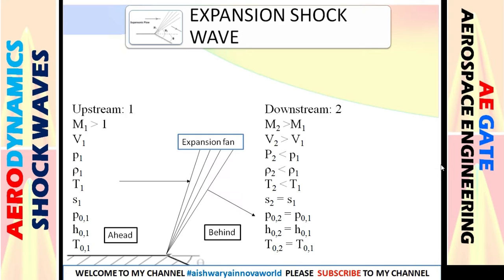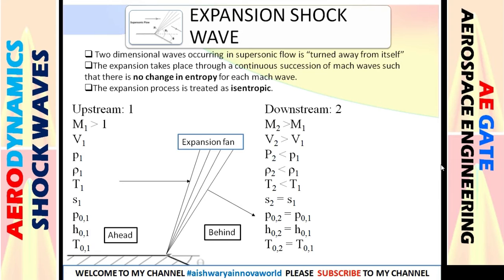An expansion shockwave is separate from the standard classification of shockwaves. It is a two-dimensional wave occurring in a supersonic flow that is turned away from itself. Crucially, across an expansion shockwave there is no change in entropy — this process is isentropic. Make a note: this is an isentropic process.